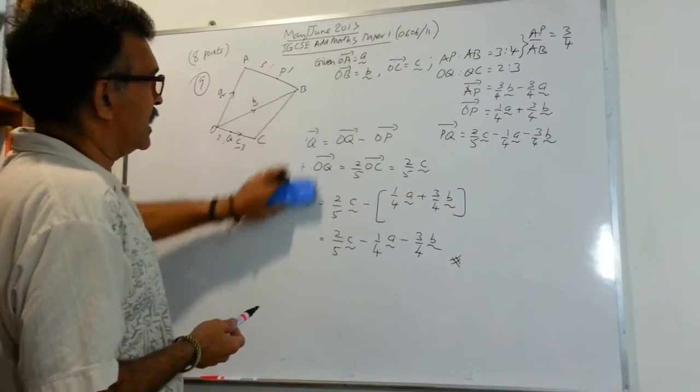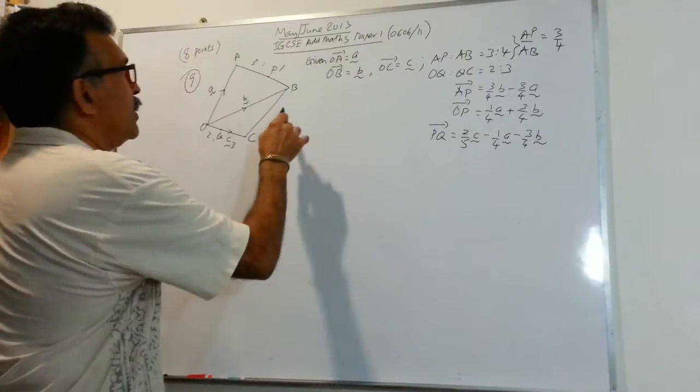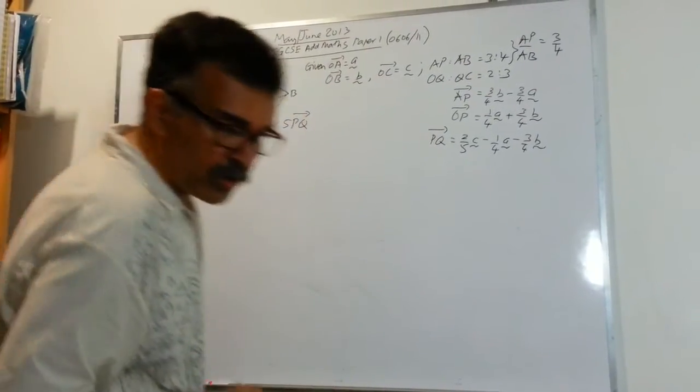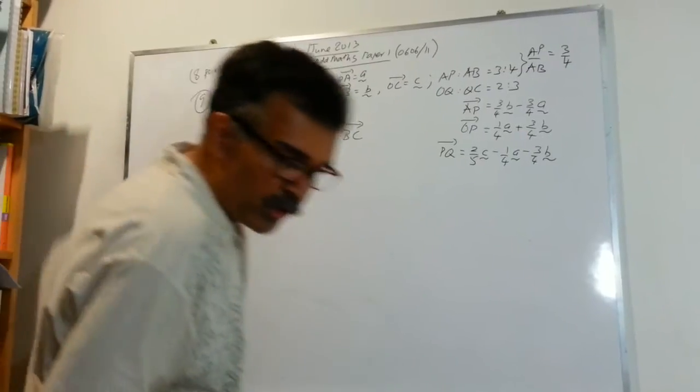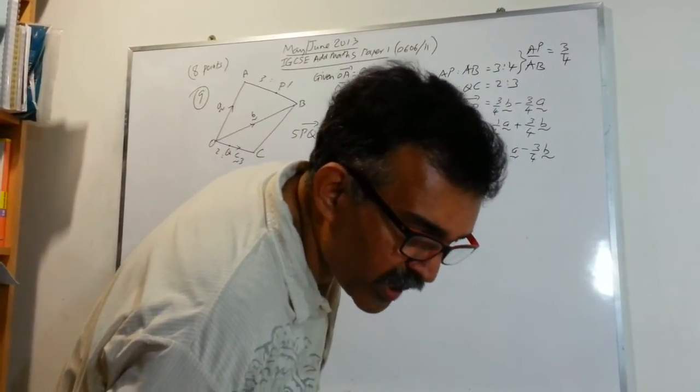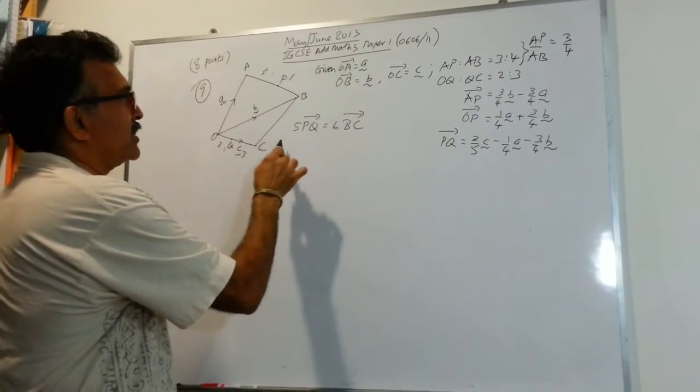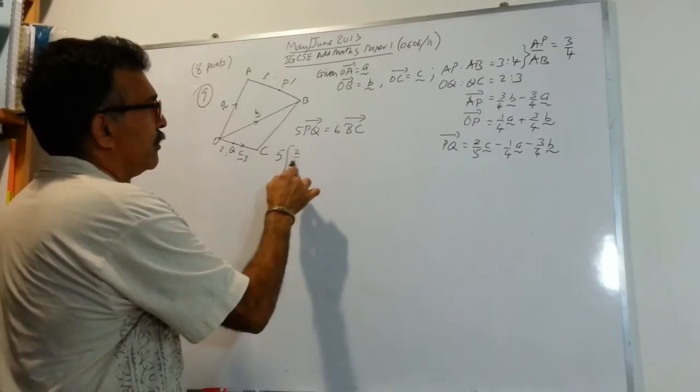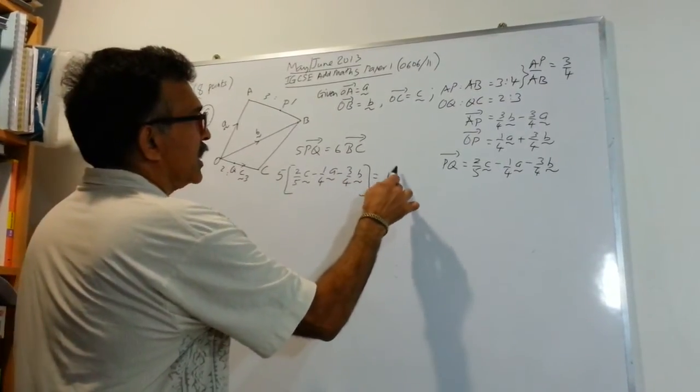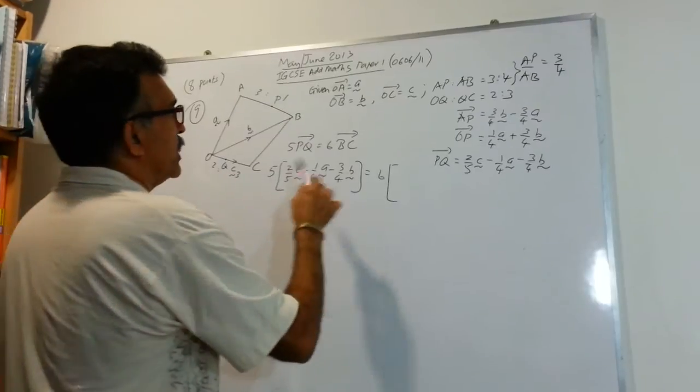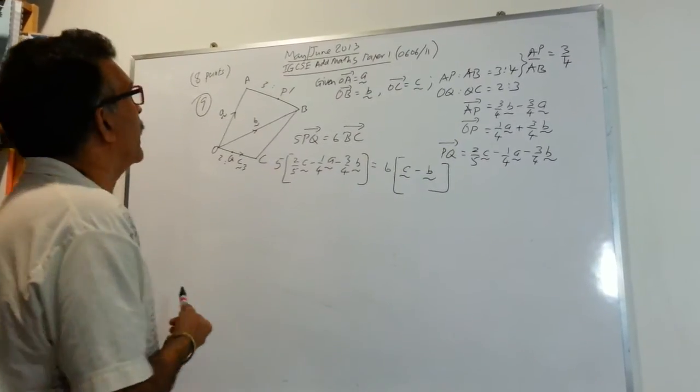Now, the last part of this problem, they gave you that 5PQ equals 6BC. They gave us this in part 3. You are given that 5PQ equals to 6BC. You have to find C in terms of A and B. So, let's borrow all the numbers that we have got on the right hand side. 5, what's PQ? 2/5 C minus 1/4 A minus 3/4 B. And, that'll be equals to 6. What's BC? OC minus OB. So, I have C minus B. BC, we know it's OC minus OB.